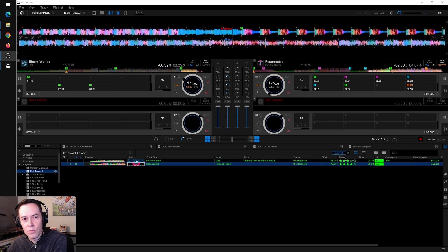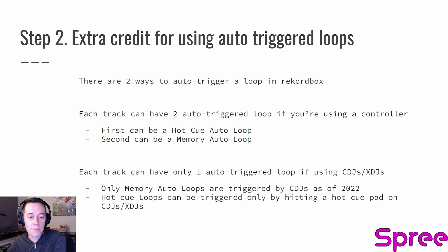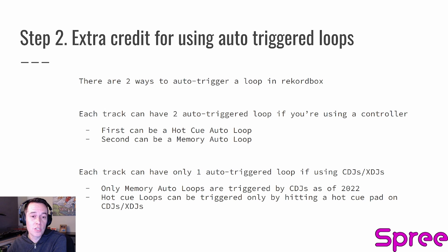So I think you get the idea of what we're trying to achieve by making our DJ edit of Resurrected. Before we jump over into Ableton, I want to show you something about looping within Rekordbox. There are two ways to auto-trigger a loop in Rekordbox. The first is that if you're using Rekordbox with a controller, you can have an auto-triggered loop as a hot cue. You can also auto-trigger a loop as a memory cue — you can have one of each activated within each track. However, if you're using a CDJ or an XDJ player, you can only auto-trigger a memory loop. CDJs and XDJs will ignore auto-triggered loops that are set as hot cue loops — those have to be set as memory loops.